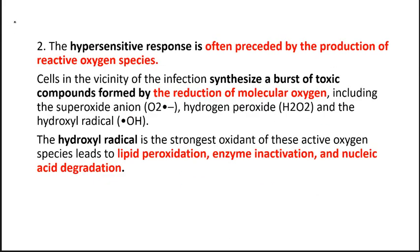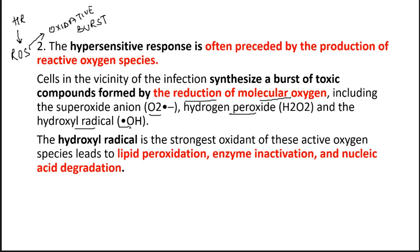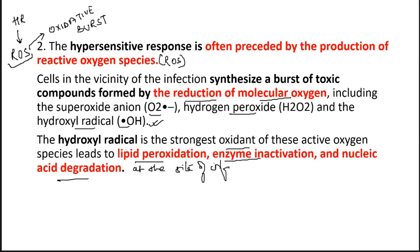After the hypersensitive response, there is a formation of reactive oxygen species, and the formation of these reactive oxygen species in large amounts is known as oxidative burst. Reactive oxygen species are formed at the site of infection by the reduction of molecular oxygen — such as superoxide anion, hydrogen peroxide, and hydroxyl radical. Among these, the hydroxyl radical is the strongest oxidant. These ROS help in lipid peroxidation, enzyme inactivation, and nucleic acid degradation at the site of infection, due to which the infection area cannot grow any further.